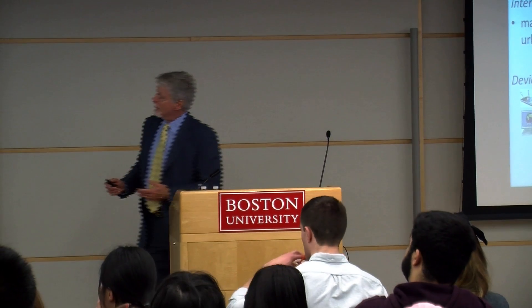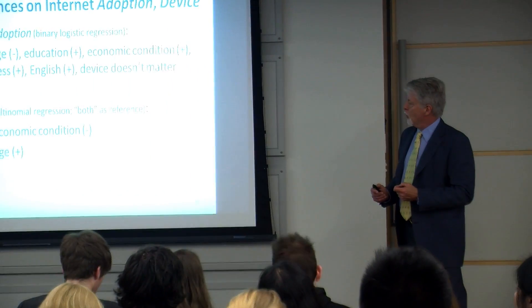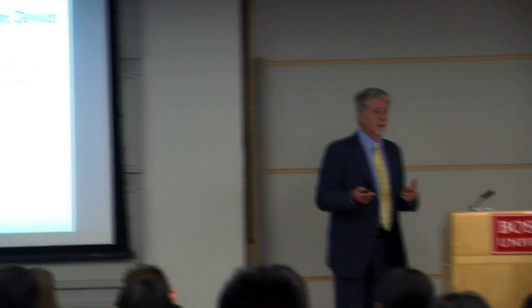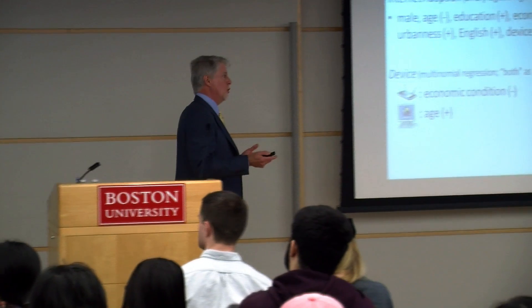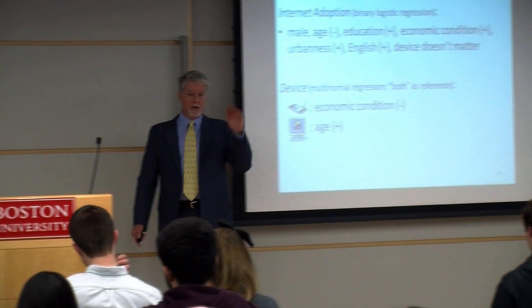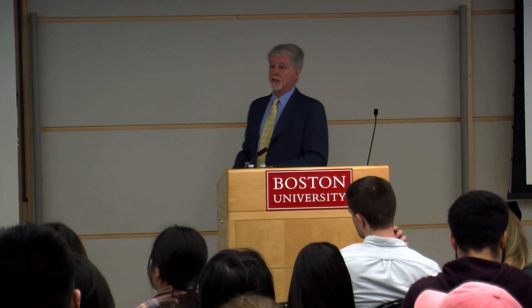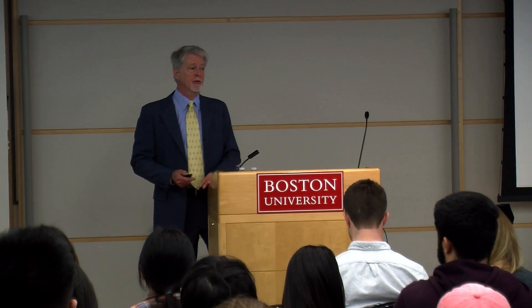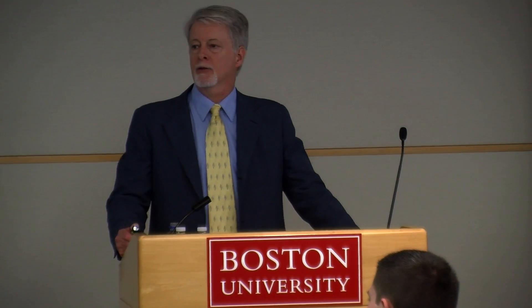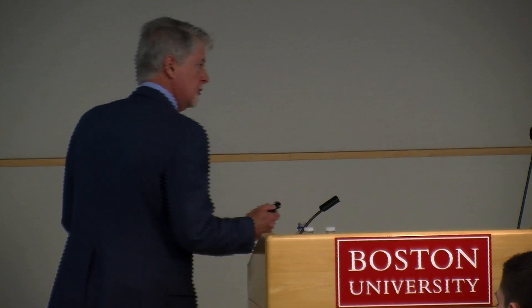What are the influences? The standard demographic ones apply. The device matters a little bit — if you have lower income in Armenia, you're more likely to use a mobile phone, but if you're older, you're more likely to use a computer. So young people with more money are more likely to use a mobile phone. But usage: younger people do it, people in better economic condition do it, but device doesn't matter for simply using the system — there's not a digital divide by device once people are using it.